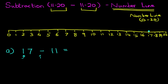Now have a look at the sign. It is minus. If it is minus, it means we are going in this direction. Subtraction is always going towards the left. So we have to take jumps to the left. How many jumps do we have to take? Look at the question. 17 minus 11. So we have to take 11 jumps to the left.